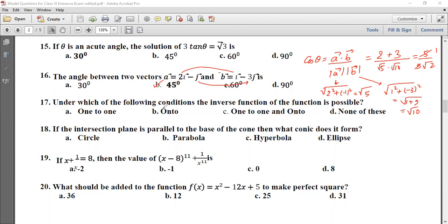Problem 17: Under which of the following conditions, the inverse function of the function is possible? So inverse is possible only if the function is one to one. Inverse function is only possible if the function is one to one.